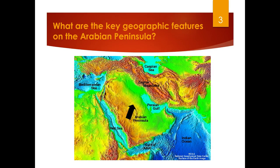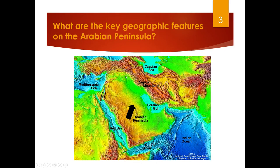Some key geographic features of the Arabian Peninsula are located on this map. First of all, this is the Arabian Peninsula itself. To the west we have the Red Sea, to the south the Gulf of Aden, and to the east the Persian Gulf. The Arabian Peninsula is generally considered to end at the base of the Zagros Mountains, which are in northeastern Iraq and western Iran. To the southeast is the Indian Ocean, to the northwest is the Mediterranean Sea, and over here is Egypt and Africa — the boundary between Asia and Africa is right here.